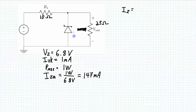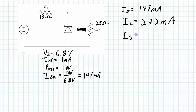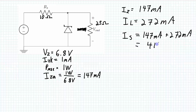Let's look at the other extreme: when we have the maximum amount of current allowable through the Zener diode of 147 milliamps. You could push through more than 147 milliamps, but that's beyond the rated power dissipation and it's probably not going to survive as long. If you push it a lot beyond 147 milliamps, it's going to burn out pretty quickly. The current to the load is still 272 milliamps, because we still want to regulate at 6.8 volts. So the current from the source is going to be 147 milliamps to the Zener diode plus 272 milliamps to the load, giving a total of 419 milliamps.